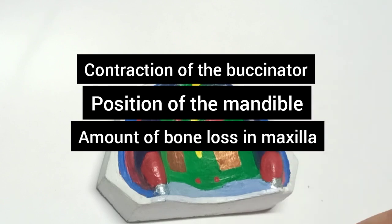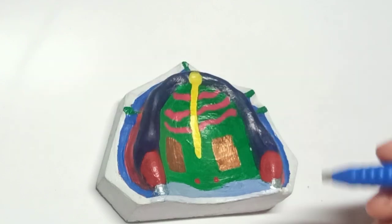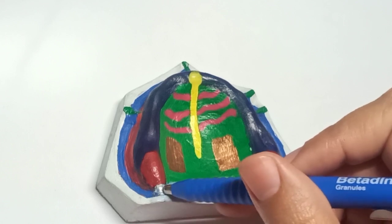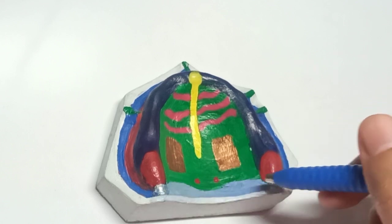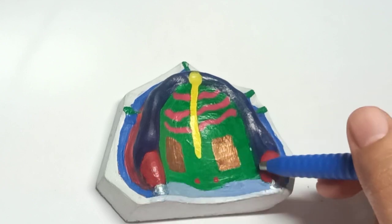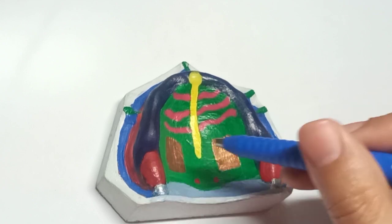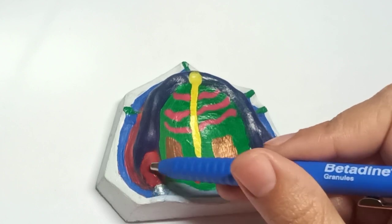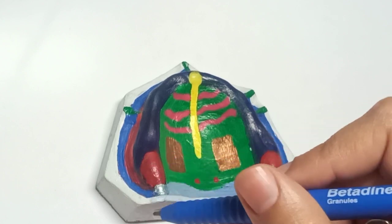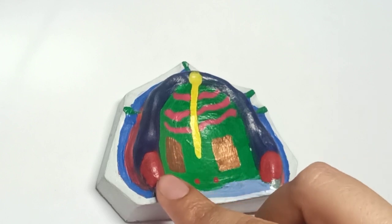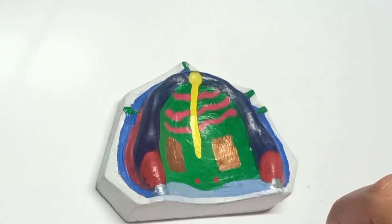Now the hamular notch — it is a depression that you can see here. It is present between the maxillary tuberosities and the hamulus of the medial pterygoid plate. It is an area of loose areolar tissue.